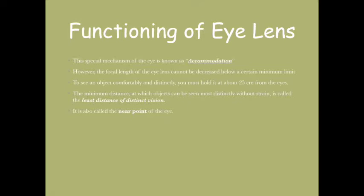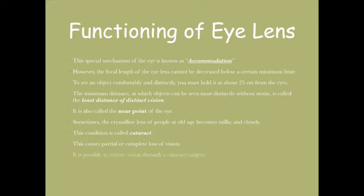Sometimes the crystalline lens of old people becomes milky and cloudy. This condition is called cataract, which causes partial or complete loss of vision. It's possible to restore vision through cataract surgery.